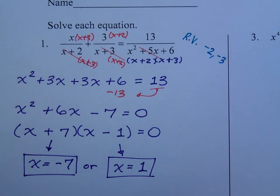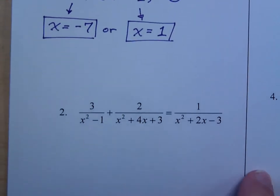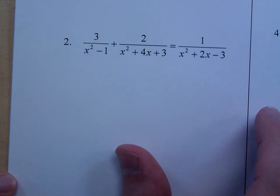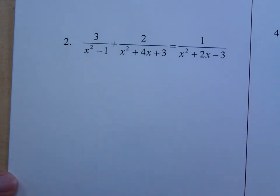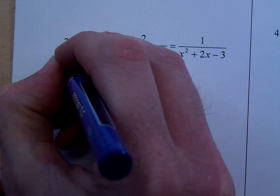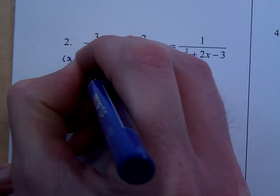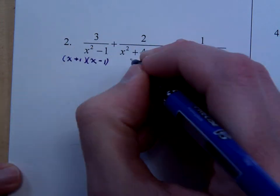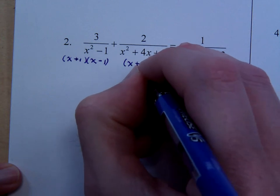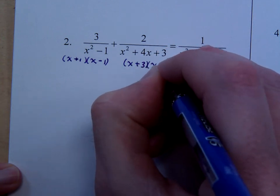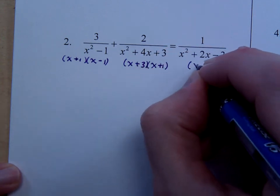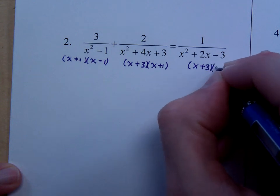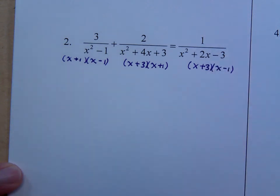Let's check this next problem, number 2. Number 2 has a bunch of denominators, so let's see how to factor each of these. This first guy factors as x plus 1, x minus 1. The guy here in the middle is x plus 3, x plus 1. And this guy over here is x plus 3, x minus 1. Your job here is to put in those missing factors so that everybody is the exact same thing.